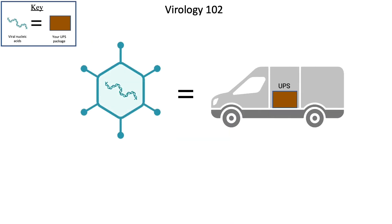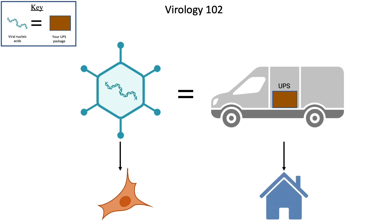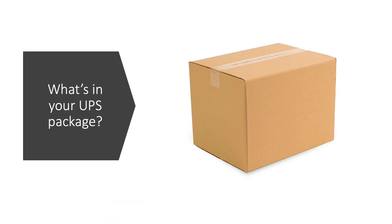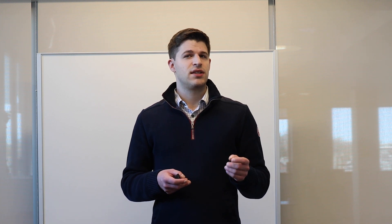Moving right along to Virology 102, you can see I added the nucleic acid into the viral shell, and similarly added a package into the UPS truck. The job of viruses is to deliver their genetic material into cells, which will then be used to make more copies of the virus. And while the UPS truck doesn't quite enter your house, it does drive up to it and drop off your package to be brought inside and processed by you. You can see the power in this — a virus could be engineered to potentially deliver whatever a human cell needs. One particularly relevant example is the use of viruses to protect us from other viruses, as is the case with some COVID-19 vaccines.